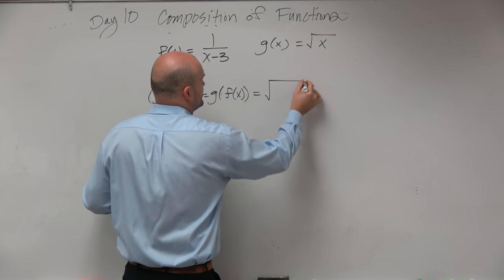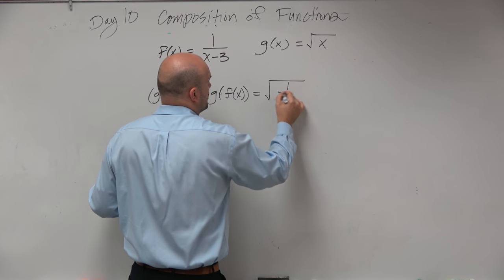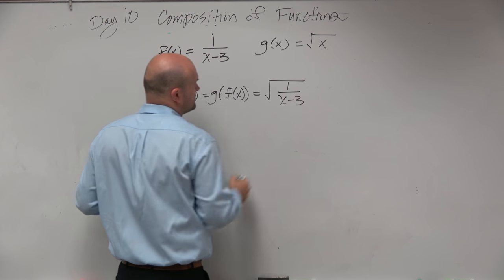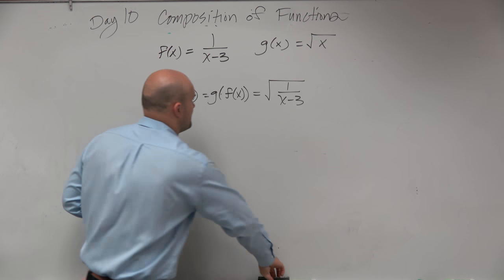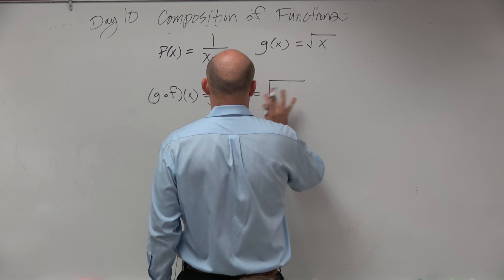So I have my g of x function, which is the square root of x. And then I have my f of x function, which is 1 over x minus 3. Oops, I'm sorry. Hold on. Let's do this slowly. Don't want to rush into things.